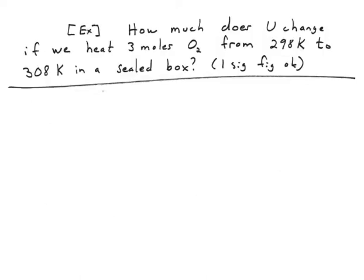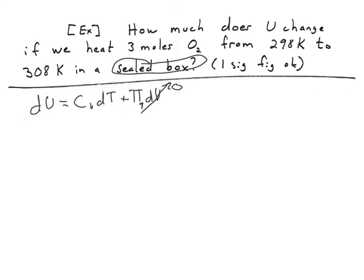So, let's do some examples. So, here we're asked how much U changes if we heat up some oxygen gas, and we're doing it in a sealed box. So, we'll go back to the original equation. So, we always write the general one first before we jump into anything specific so we don't misapply. And we see, oh, it's a sealed box. Well, if it's a sealed box, that implies that the volume is constant. And if we look at this, we're going from 298 to 308. It's a pretty small temperature range. And we're only really doing this to one sig fig.